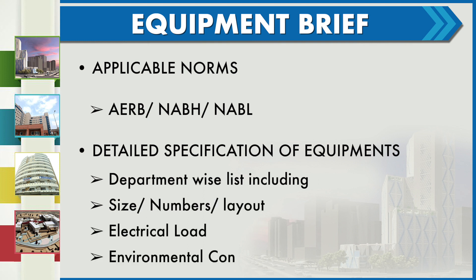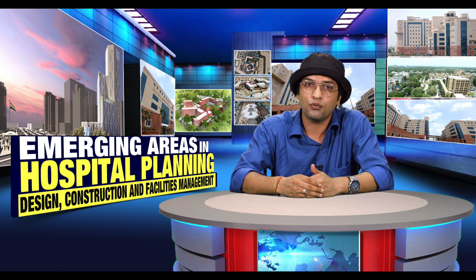The equipment brief will include applicable norms such as AERB (Atomic Energy Regulatory Board), NABH (National Accreditation Board for Hospitals), and any other norms to be followed. It will also contain detailed specifications of equipment to be procured, including department-wise lists with sizes, numbers, layout, electrical load requirements, and environmental conditions required such as temperature and room conditions for each piece of equipment.